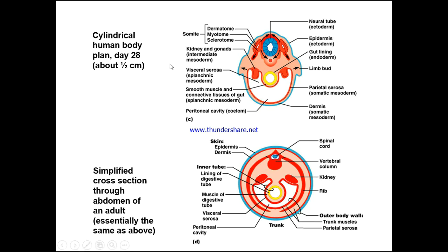The cylindrical human body plan is accomplished by day 28 — about half a centimetre wide. Here we can see the somite divisions: the dermatome, myotome, and sclerotome; the neural tube; the ectoderm forming the epidermis; the endoderm forming the gut lining; and the limb bud. We're going to talk about limbs in our next lecture on limb bud development. We also have the parietal serosa, the somatic mesoderm, the dermis, the somatic mesoderm, and the peritoneal cavity — the coelom.